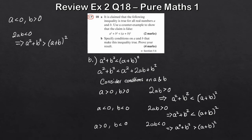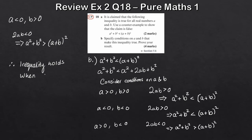So what conditions make the inequality hold? As we can see, the inequality holds when A and B are either both positive or both negative. And there we have it — that's essentially a proof by exhaustion, because we've gone through all four possible sign conditions and exhausted each one.